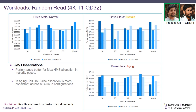In the case of random read with 4K chunk size, 1 thread, queue depth 32, among all drive states and different queue configurations, performance was better when HMB allocation was equal to the maximum or preferred size. In the aging state, across different queue configurations, when the allocation was equal to half the preferred size, performance was more consistent.